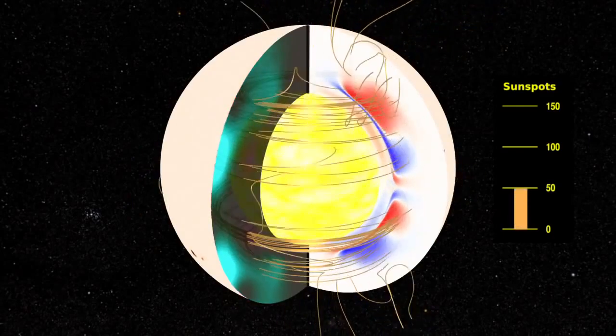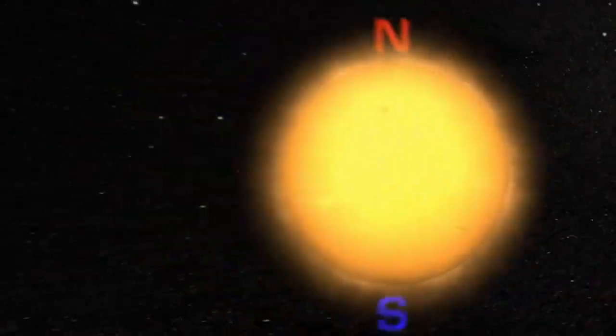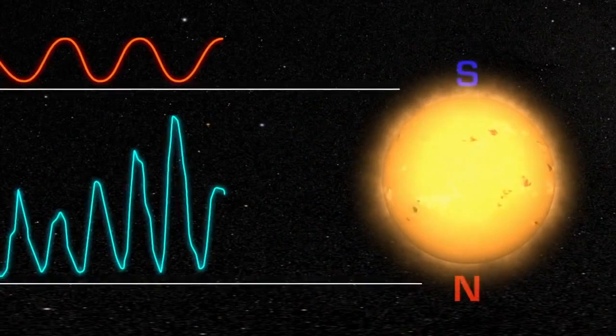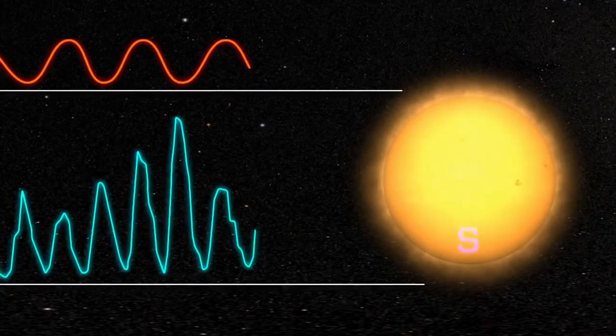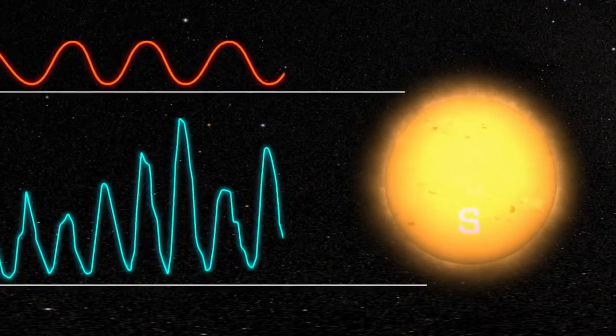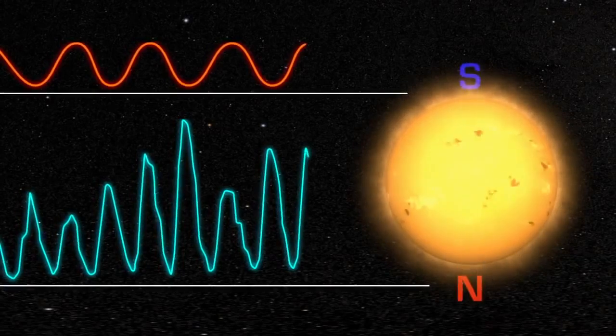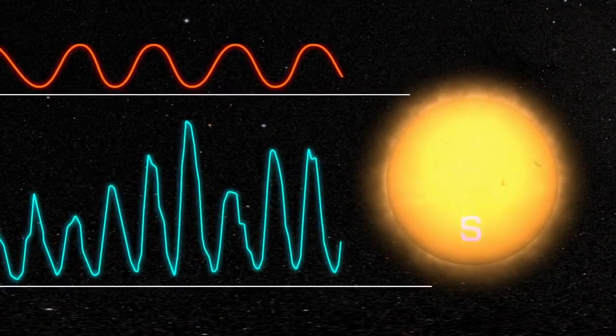Because the sunspot cycle follows a similar pattern regardless of the orientation of the poles, it only takes half as long as the solar cycle. The two cycles are different, but the 11-year sunspot cycle is often referred to as the solar cycle, which can be a little confusing.